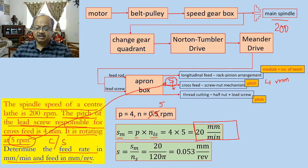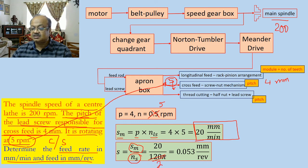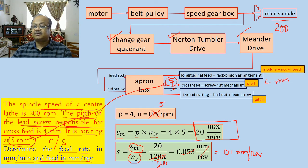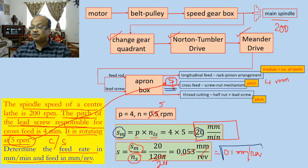The feed is the feed rate divided by the spindle speed: 20 divided by 200 = 0.1 millimeters per revolution. Here also, no information was given about the change gear quadrant, Norton-Tumbler, or Meander drive — these were not required because the rotational speed of the cross-feed lead screw and its pitch were directly given, allowing the feed rate and feed to be calculated.